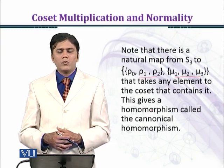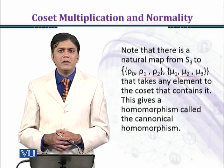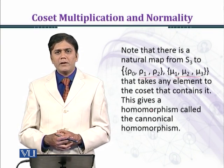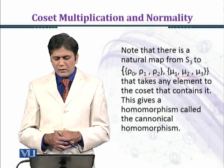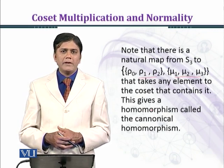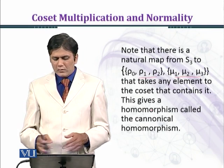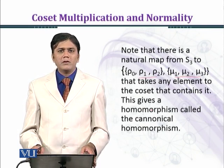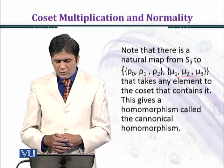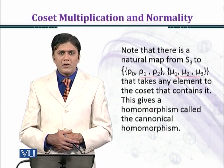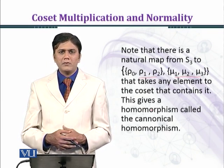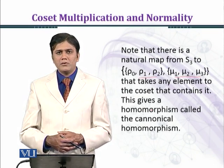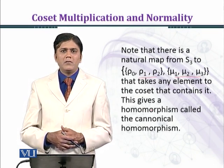Here you can see the quotient group has two cosets. One is the identity coset, which we can denote by H, and the other one is {mu1, mu2, mu3}.